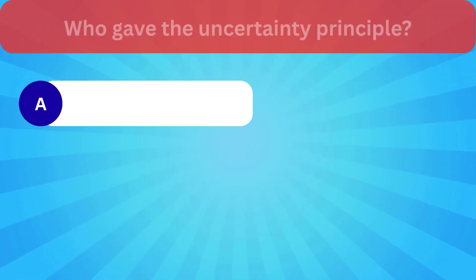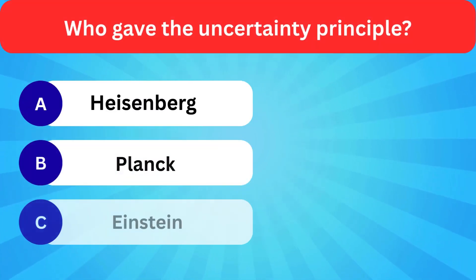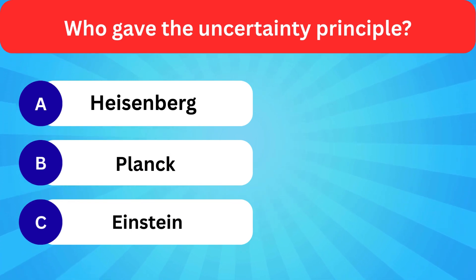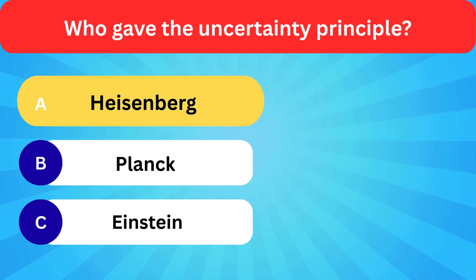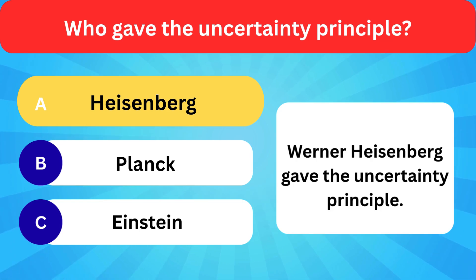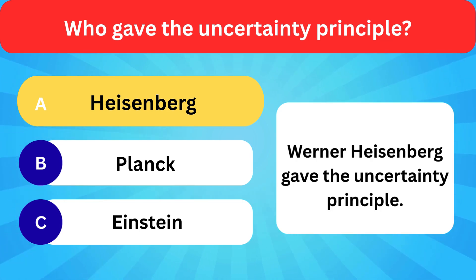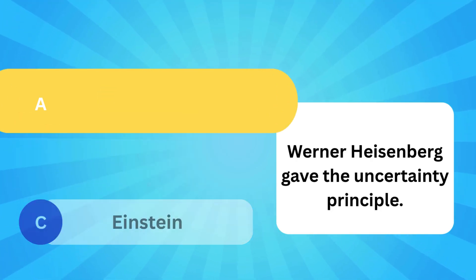Who gave the uncertainty principle? Options: Heisenberg, Planck, Einstein. Correct answer is Heisenberg. Werner Heisenberg gave the uncertainty principle.